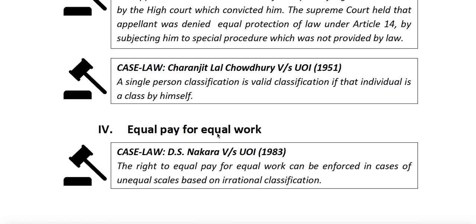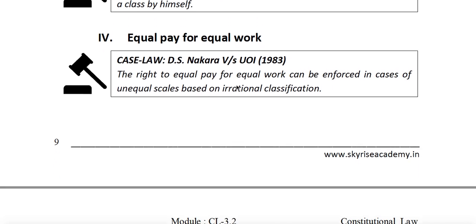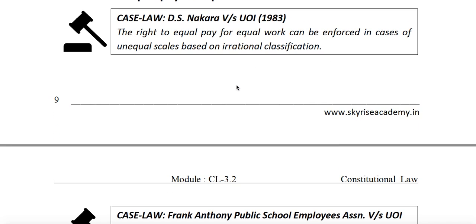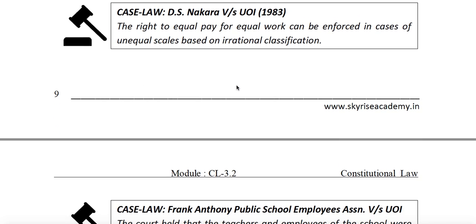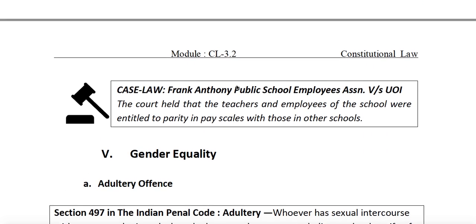Article 14 even permits single-person classification if it is a valid case. Equal pay for equal work can be enforced when there are unequal pay scales arising from irrational classification.